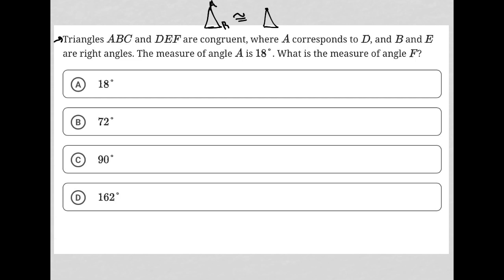I'm going to label this ABC and in the same order, DEF, where A corresponds to D and B and E are right angles. Okay, so that means I drew this wrong. I'm going to redraw.